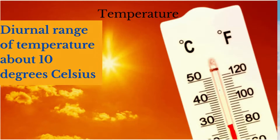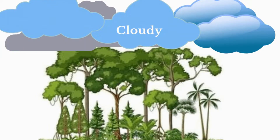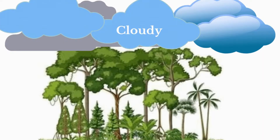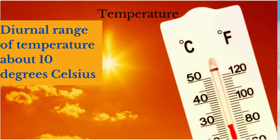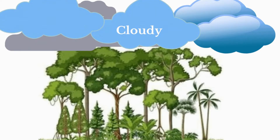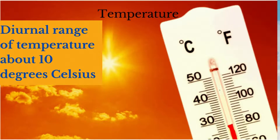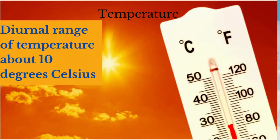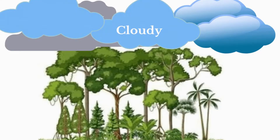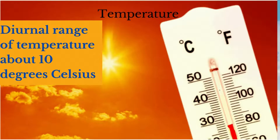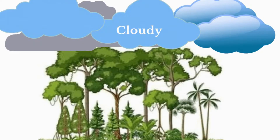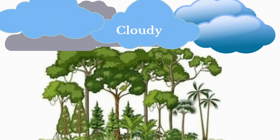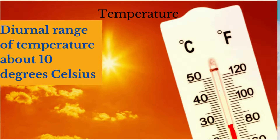The diurnal temperature range — the difference between the largest and smallest temperature for the day — is not as small as the annual range, but is still small. It is seldom more than 10 degrees Celsius. This is owed to the extensive cloud cover, which reduces sunlight in the day and also reduces radiation loss at night.